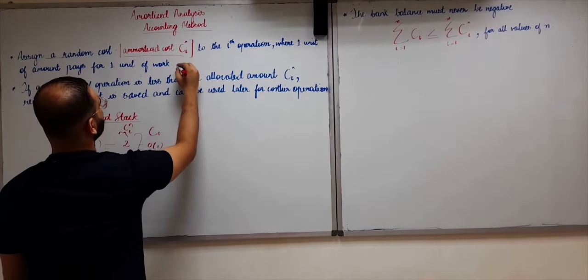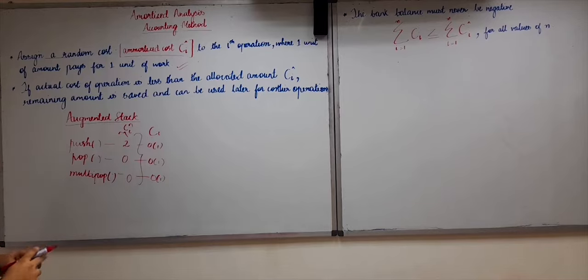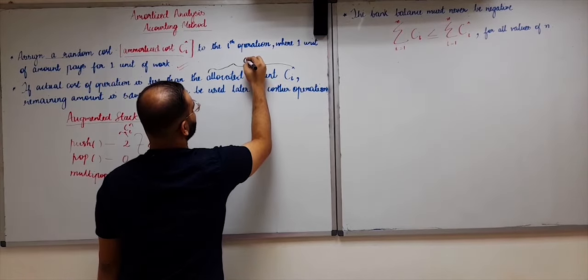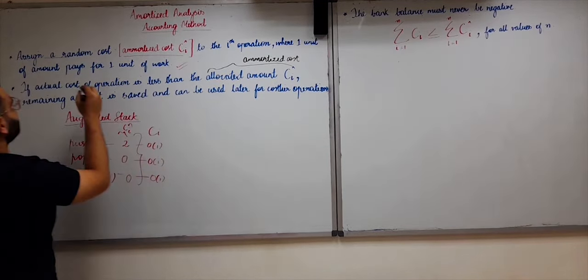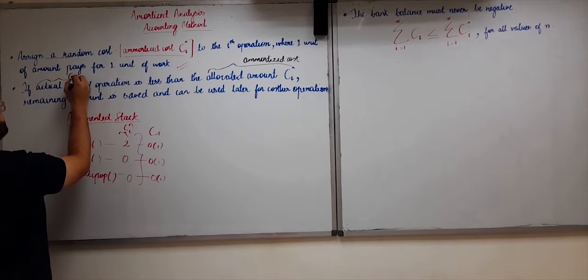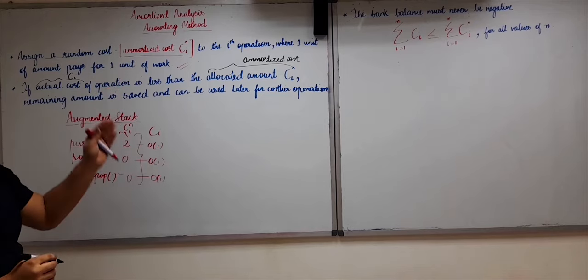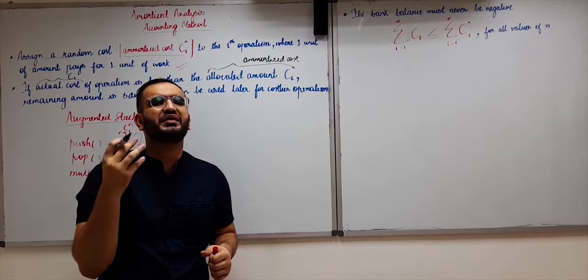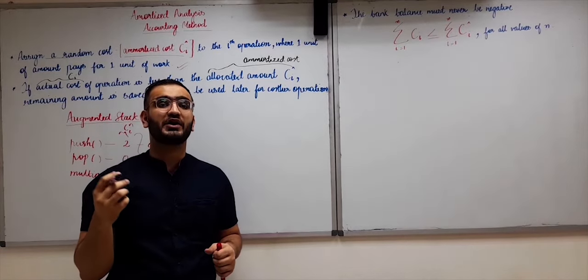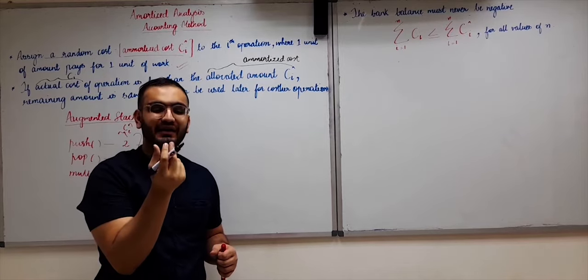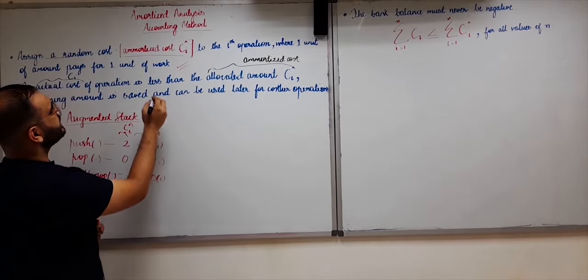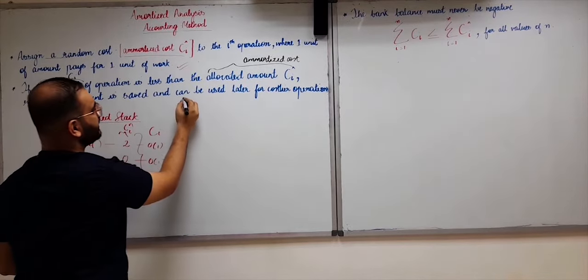Now in the second step, if the actual cost of an operation is less than the allocated amortized cost ci-cap, the remaining amount is saved and can be used later for costlier operations. For example, if we assign a cost of 3 for a particular operation whereas that operation could be performed at a lesser cost of 1, that difference is saved and can be used later for more costly operations.